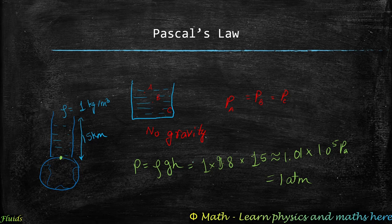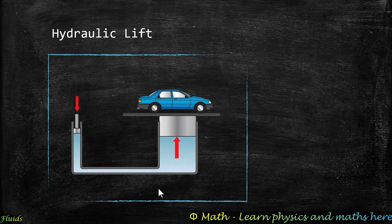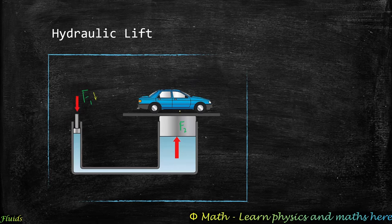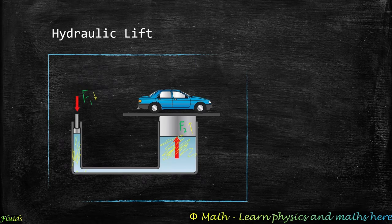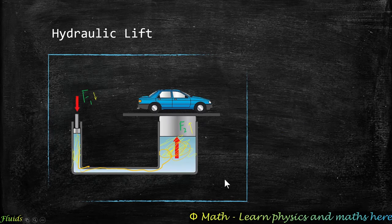Since pressure transfers undiminished and equally in all directions, we can utilize this in a hydraulic lift. If we apply a small force F1 on a piston with a small area, we get a much larger output force F2 on a piston with a larger area. This is because the pressure sent from the small area travels through all the fluid and comes out over the large area, resulting in a much larger force.